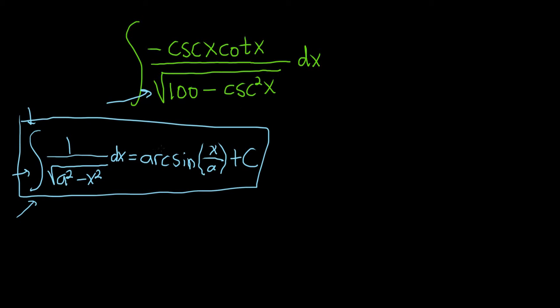So let's think about what we can do. First of all, the 100 can be written as 10 squared. And it looks like we can make a u substitution. We'll let u equal cosecant of x.